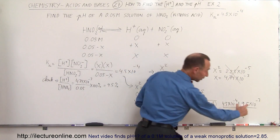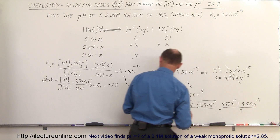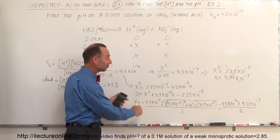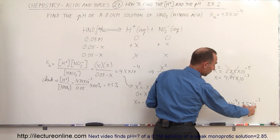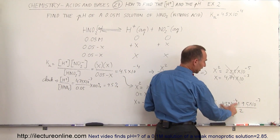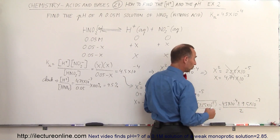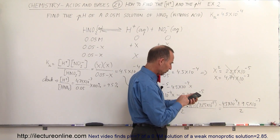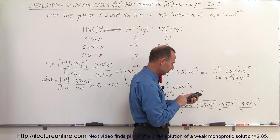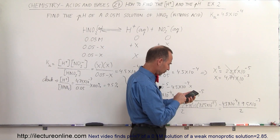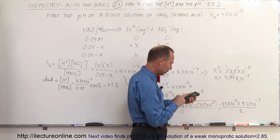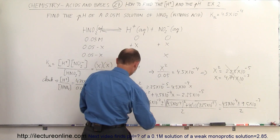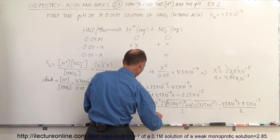Since 9.5×10⁻³ is larger than 4.5×10⁻⁴, subtracting would give a negative concentration, which is not physical. So we must add: 9.5×10⁻³ minus 4.5×10⁻⁴, divided by 2. Finally, we get X equal to 4.5×10⁻³. This is the more accurate value for the concentration of the hydrogen ion.